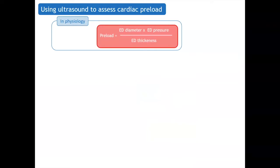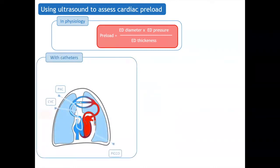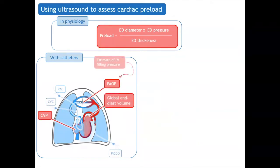For physiologists, preload is determined by the end-diastolic diameter, pressure, and thickness of the ventricles. This is the physiological definition of cardiac preload. Nevertheless, in clinical practice, we assess either the dimensions or the pressures of the right ventricle and of the left ventricle. We do not have any perfect estimation of cardiac preload that corresponds to the physiological definition of this variable.